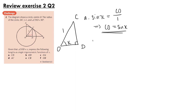For part B, looking at OD — that is the adjacent to angle x. So cos of x equals the adjacent OD over the hypotenuse, which is 1. Therefore OD equals cos x.